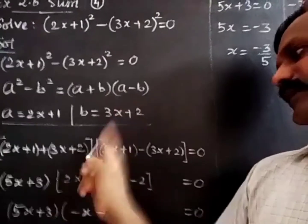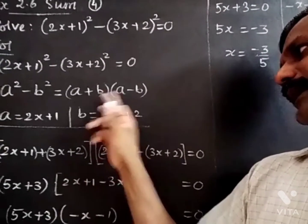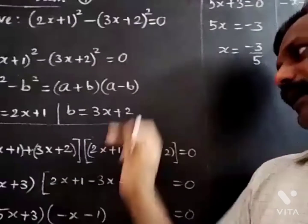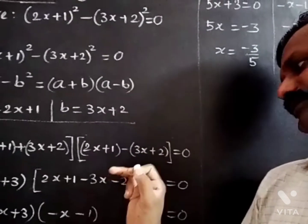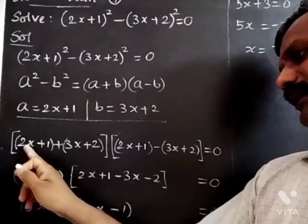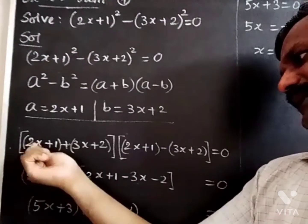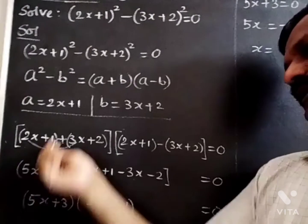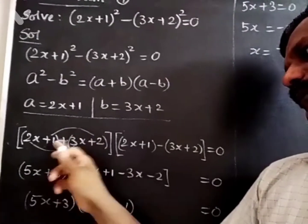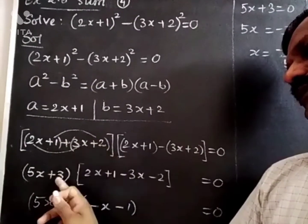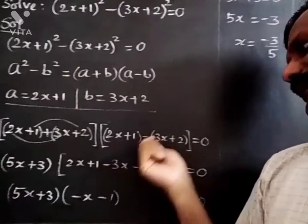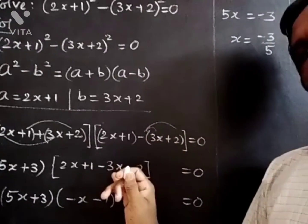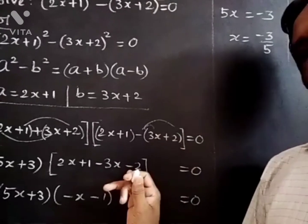There are two bracket products. The first bracket: A squared is (2x + 1), plus B squared is (3x + 2). The second bracket: A squared is (2x + 1), minus B squared is (3x + 2). Minus B gives us minus 3x and plus 2 becomes minus 2.